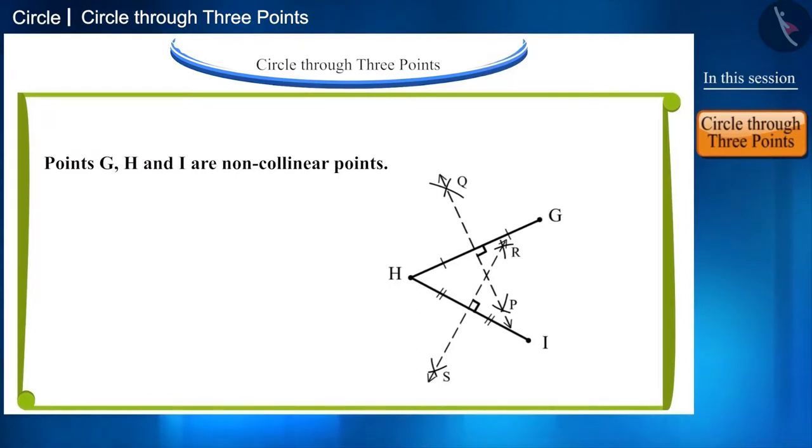We know that each point of the perpendicular bisector of a line segment is equidistant from its endpoints. Point O is located on perpendicular bisector P, Q of line segment G, H, that is why O, G and O, H are equal. Similarly, O, H and O, I will also be equal.